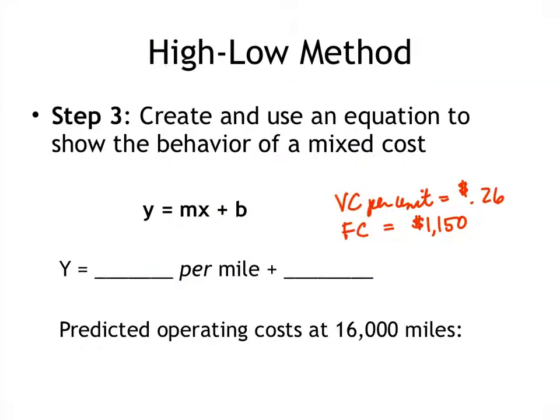Step three in the high-low method is to create and use the equation to show the behavior of a mixed cost. In this case we're going to solve the total cost at sixteen thousand miles. So remember that the equation of a line is y equals mx plus b. m is the slope of the line and b is the y-intercept or the fixed cost. Okay so when we write this in our equation we have y equals zero point two six which is zero point two six dollars per mile plus that fixed cost that we found which was one thousand one hundred fifty dollars.